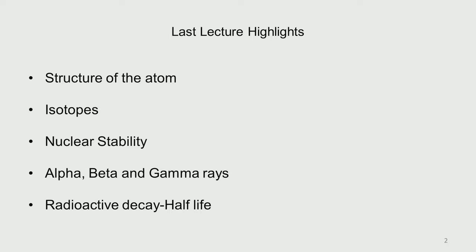Then we talked about nuclear stability — what is required to be stable, what are the conditions under which we have most nuclear stability, and beyond a certain mass number we don't have stable nuclides. Then we talked about how these unstable nuclides radiate radioactivity in the form of alpha, beta, and gamma rays. We also talked about the concept of half-life and the half-life of different elements.